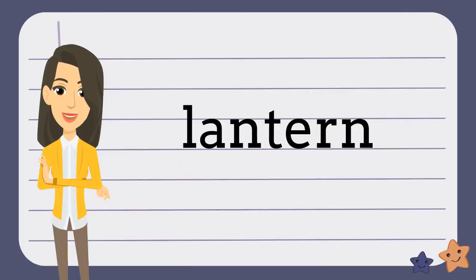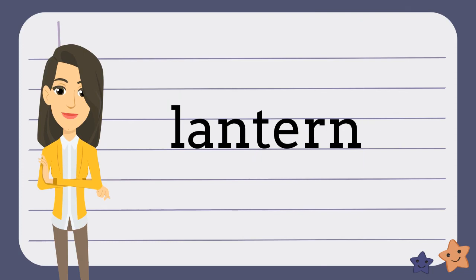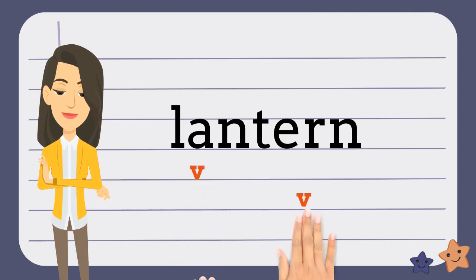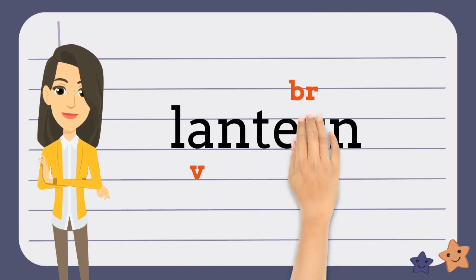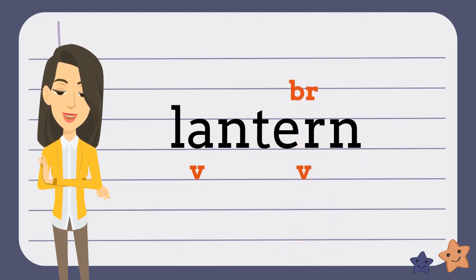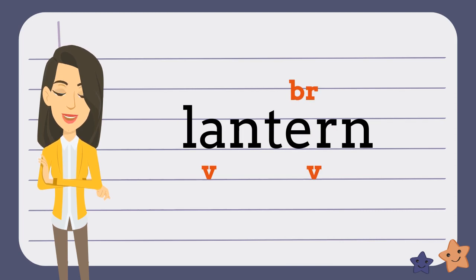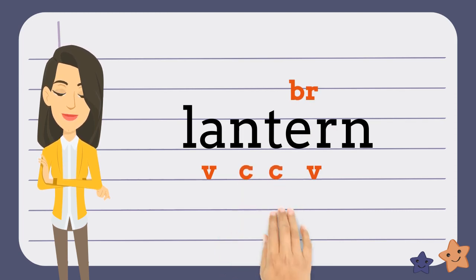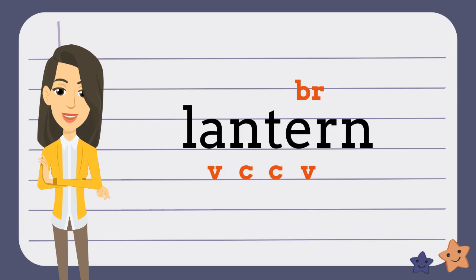Let's take a look at this word. The first thing you need to do is find the vowel and the bossy-R. So in this word, the vowel is A and the bossy-R is E-R. Now find the consonants between the vowels. Next, bridge the vowels.